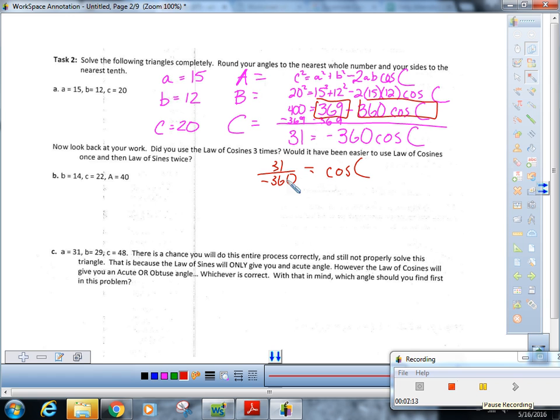So cosine inverse 31 over negative 360 with a bunch of parentheses. Cole? All right, and we were told to round to the nearest degree, so 95 degrees.